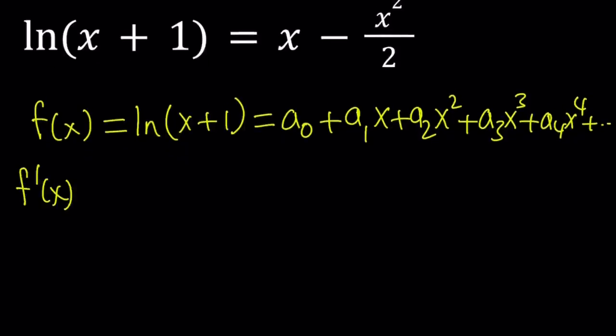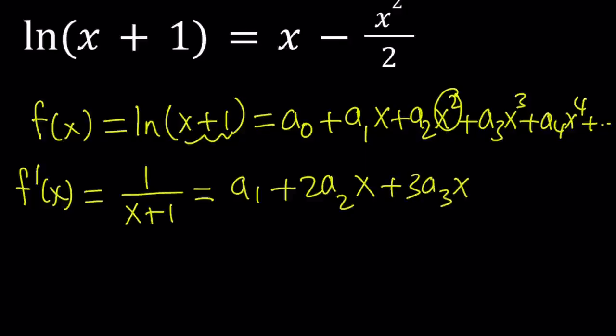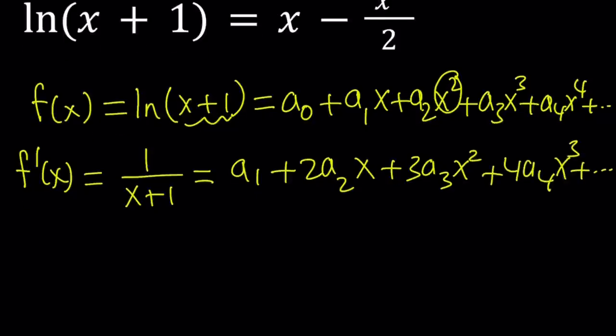The first derivative of ln(x+1) is 1 over (x+1). The ln function is easy to differentiate - you just differentiate it and then divide by the function itself. The derivative of the infinite polynomial: a₀ is a constant, so its derivative is 0. The derivative of a₁x is just a₁. The derivative of x² is 2x, but multiply that by a₂, you get 2a₂x, plus 3a₃x², plus 4a₄x³ and so on. This is going to go on forever.